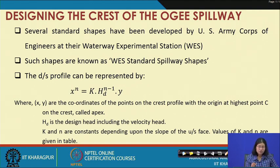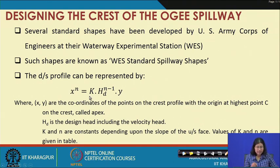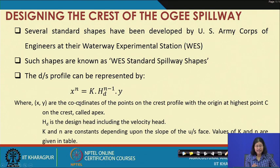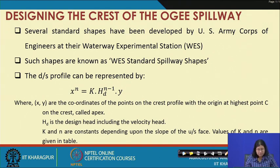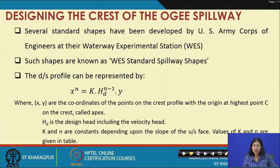The equation for the downstream profile can be approximated by a simple empirical equation: x to the power n equals k times H_d to the power 0.85 times y, where H_d is the design head including the velocity head, and x and y are the coordinates of a point on the crest profile with origin at the highest point C. K and n are constants depending upon the slope of the upstream face, and their values can be retrieved from a table.